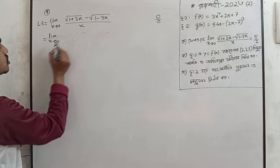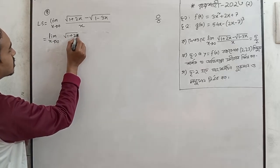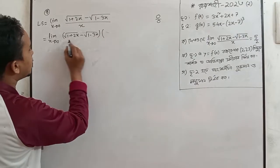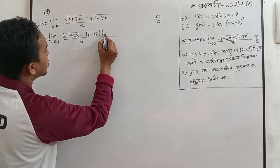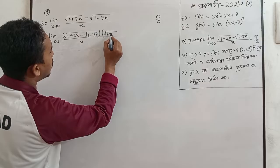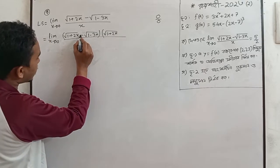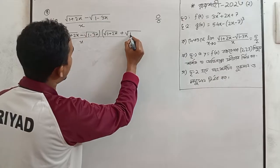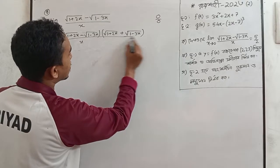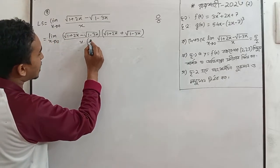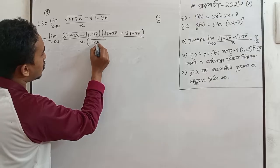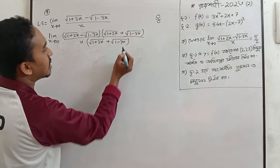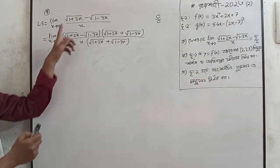We have 1 plus 2x minus root over 1 minus 3x. I have two values: root over 1 plus 2x. Since the sign is minus, we will add plus to the base 1 minus 3x.